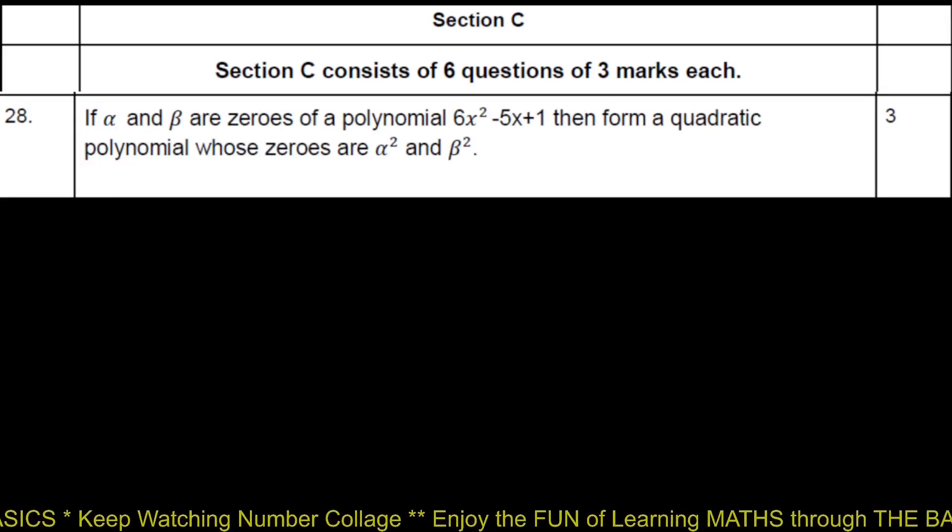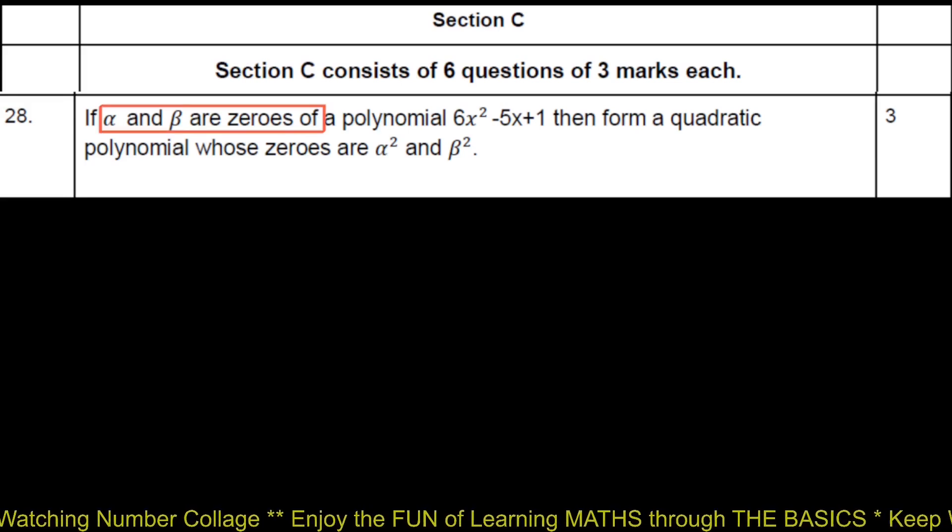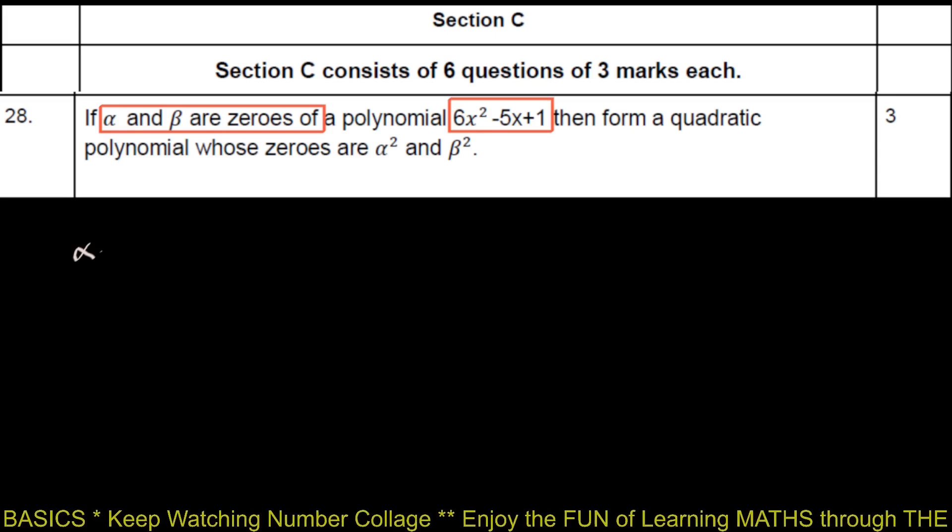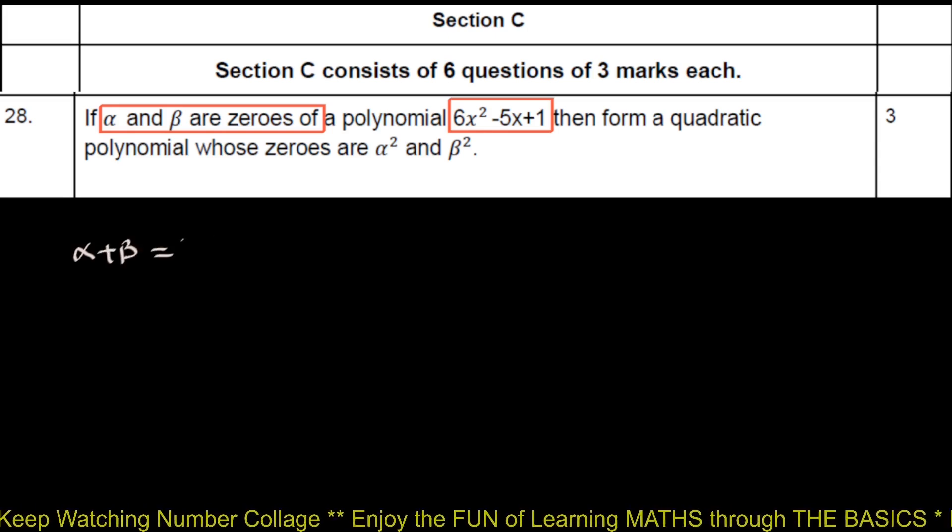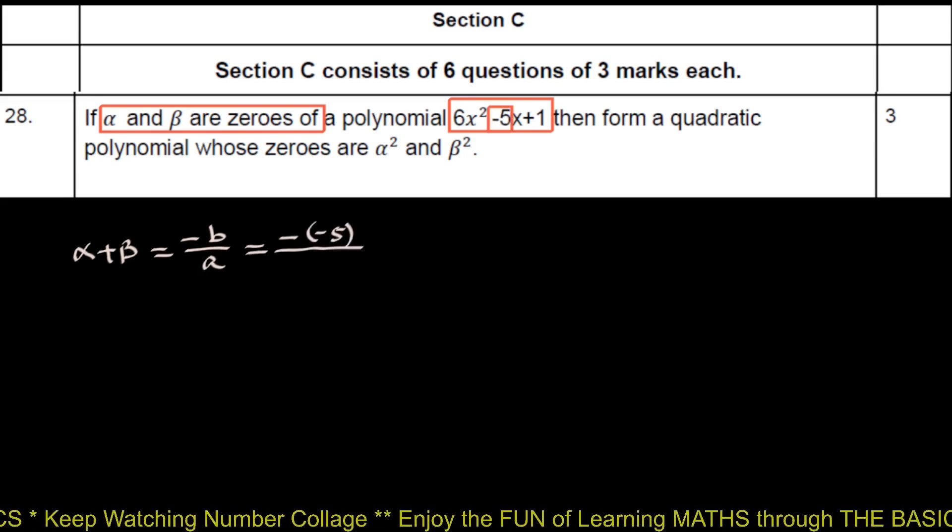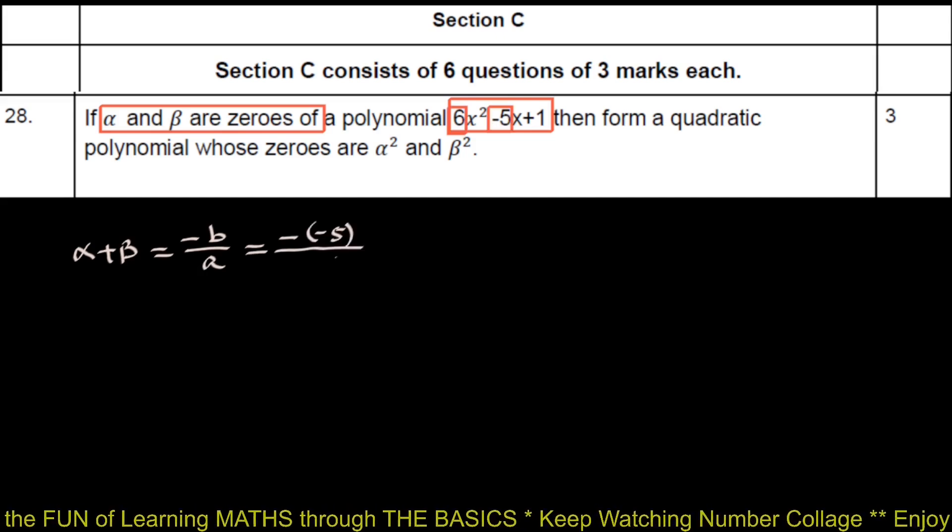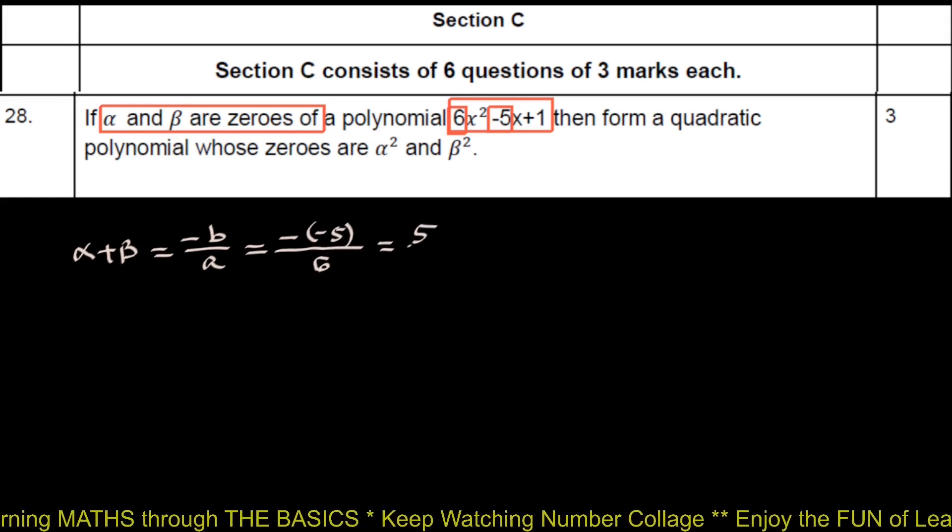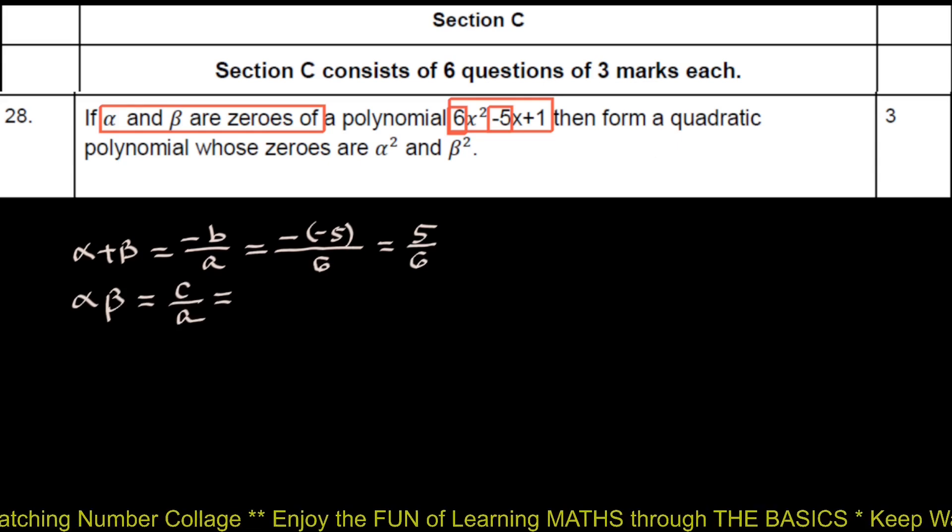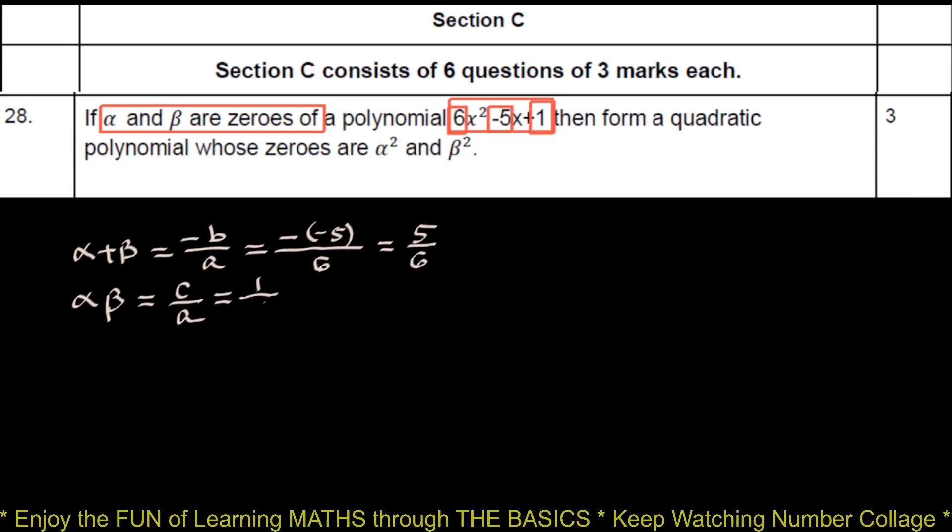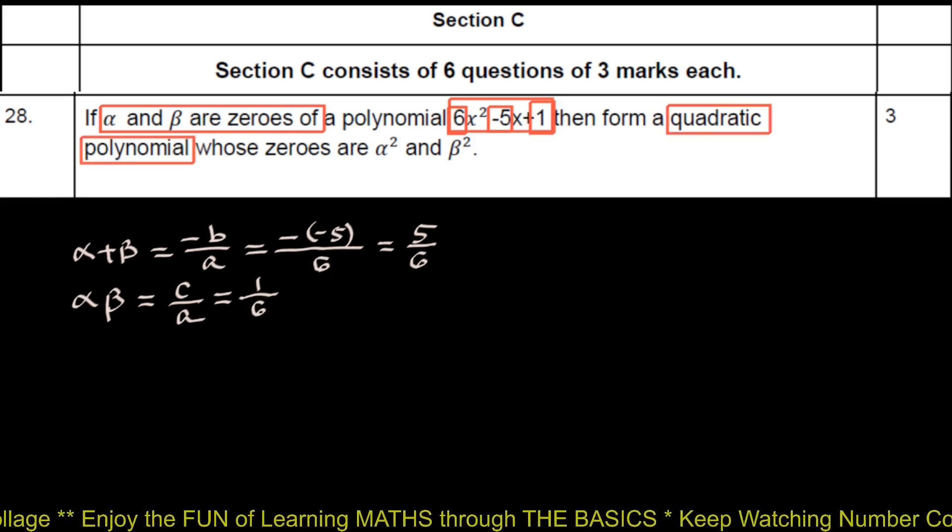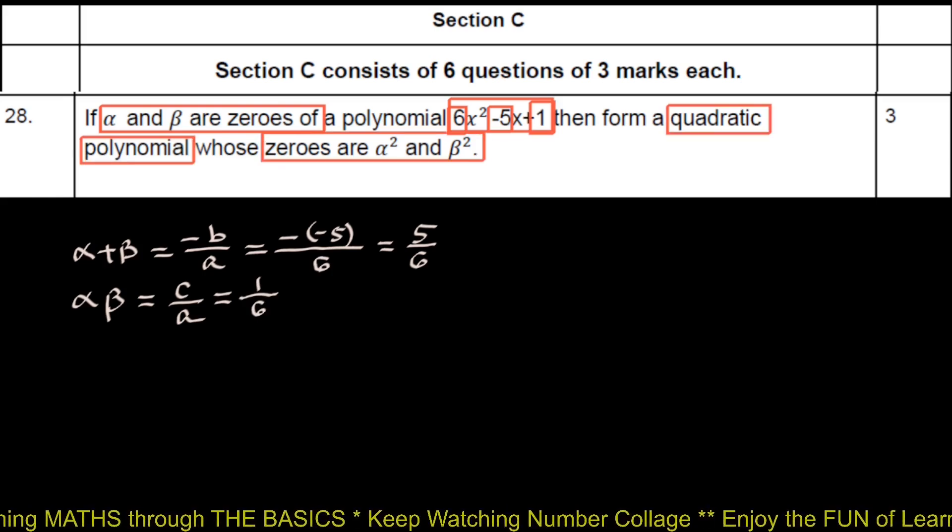Alpha and beta are the zeros of polynomial 6x square minus 5x plus 1. So we have alpha plus beta equals minus b upon a, minus of this minus 5 upon this a 6, which is 5 upon 6. Alpha beta is c upon a, which is this one upon a which is 6. We have to find the quadratic polynomial whose zeros are alpha square and beta square.